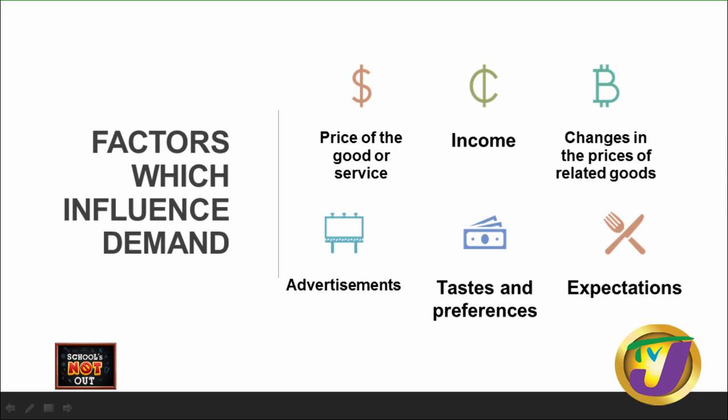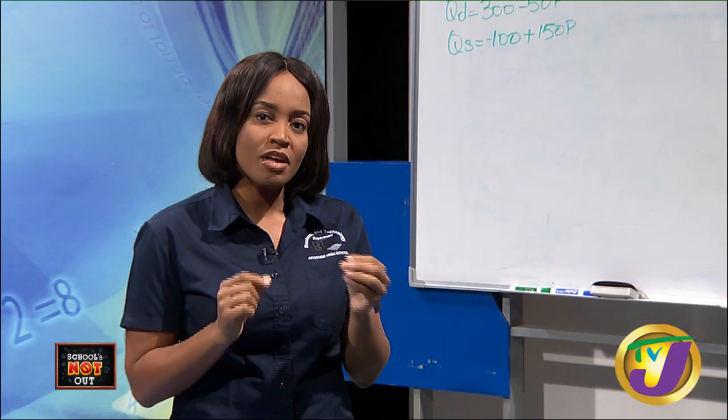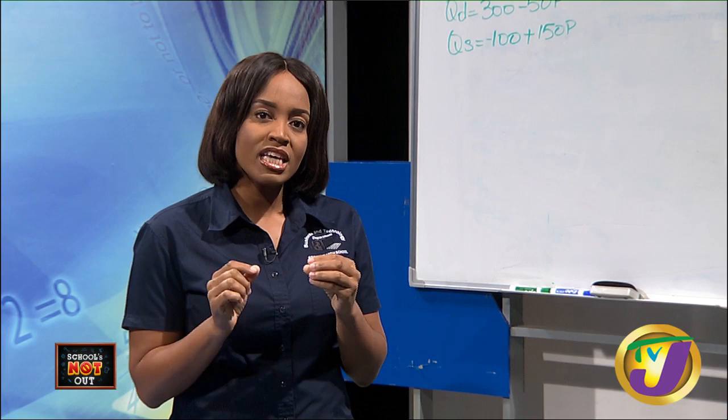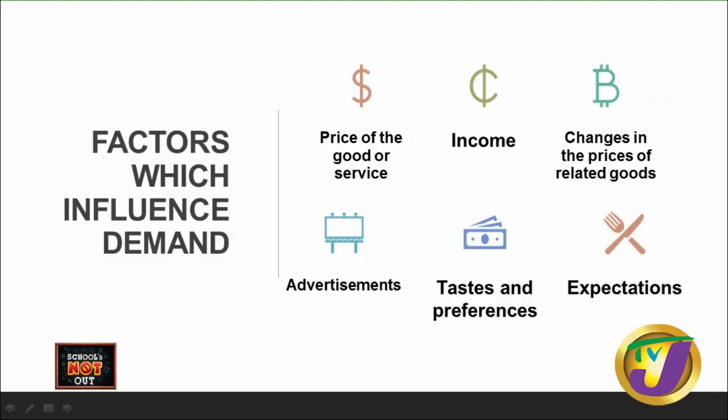What happens when the price changes for these related goods? For a substitute, if the price of butter is higher, you decide not to purchase butter and instead purchase margarine — so demand for butter decreases and demand for the substitute, margarine, increases. If the price of butter is actually lower, you might decide to purchase more butter, and the demand for margarine will decrease because people can afford butter and don't have to purchase margarine.